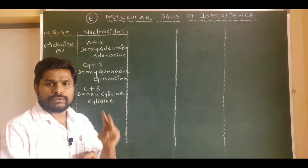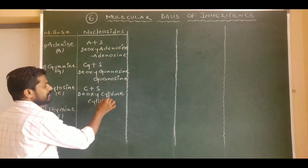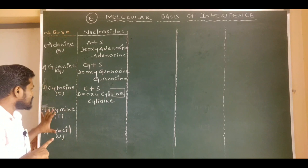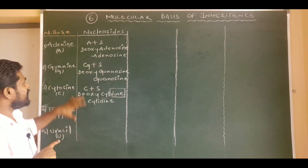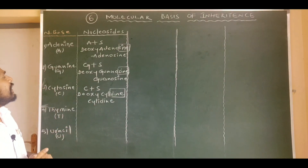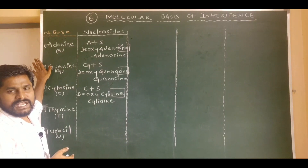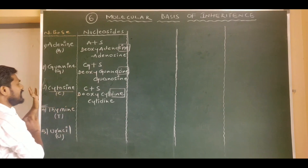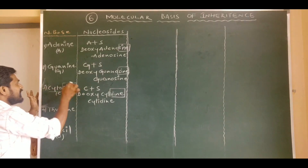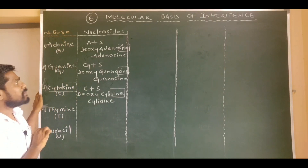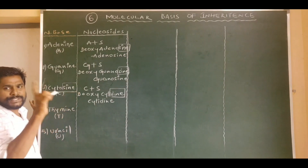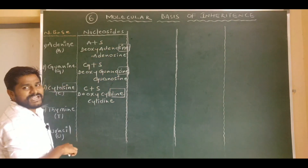Here I want to tell you two important points. First, if you observe, '-dine' (D-I-N-E) is a suffix for the names of nucleosides having purines as nitrogen bases. Similarly, '-sine' (S-I-N-E) is also a suffix for nucleoside names with purines. Second, note that cytosine — with '-sine' at the end — is entirely the name of a nitrogen base, not a nucleoside. Adenosine and guanosine are nucleosides, but cytosine is a nitrogen base. Cytidine is the nucleoside. Remember these two points.